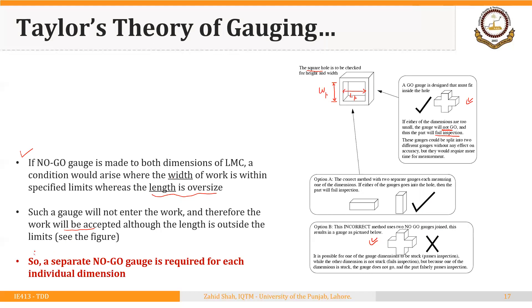The conclusion is that we need a separate no-go gauge for each individual dimension. For example, we may have one no-go gauge to check the length and another to check the width of the square hole.